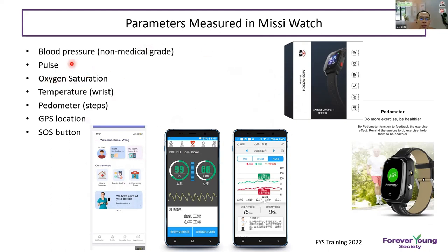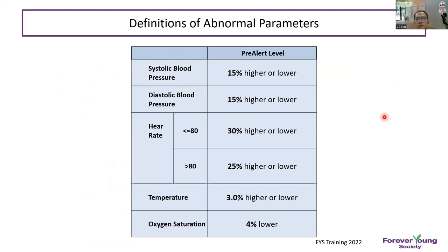Based on the parameters monitored — blood pressure, pulse, oxygen saturation, and temperature — we use clinical practice experience and an AI formula to individualize the parameters. For example, if someone's heart rate is 60 and it increases by 20 to 80 over two days, although 80 is still within normal range, because it's more than 30% from the baseline, it will alert the linked app and prompt whether the nurse should go to the house to check.